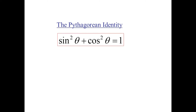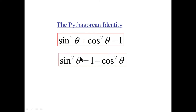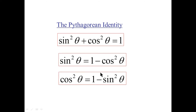The Pythagorean identity says that sine squared plus cosine squared equals 1. But this can be rearranged — it comes in three flavors: sine squared plus cosine squared equals 1; sine squared equals 1 minus cosine squared; or cosine squared equals 1 minus sine squared. These are the three flavors of the Pythagorean identity.